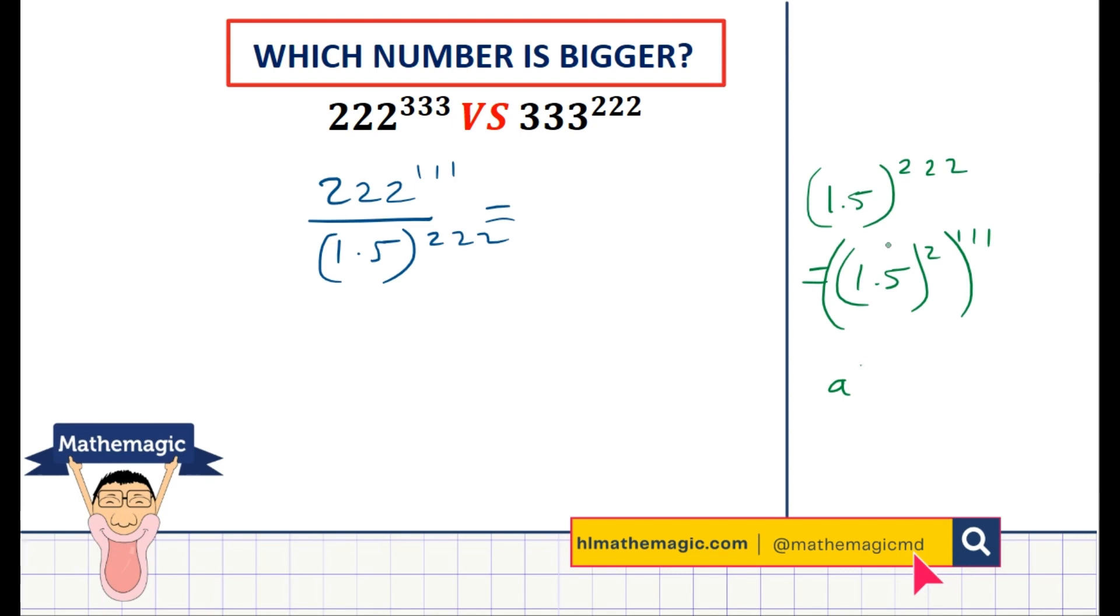And this is true because a to the power n to the power m multiplies each other. So this will be like a to the power n m. And so you're allowed to separate the exponents as multiplications. And we can do this in this case, and this will be like a really nice little shortcut. So we got 222 to the power 111 divided by 1.5 squared to the power 111.